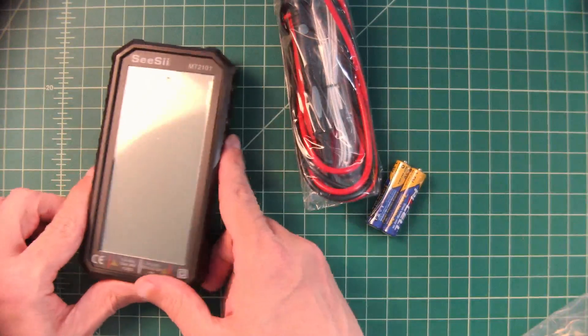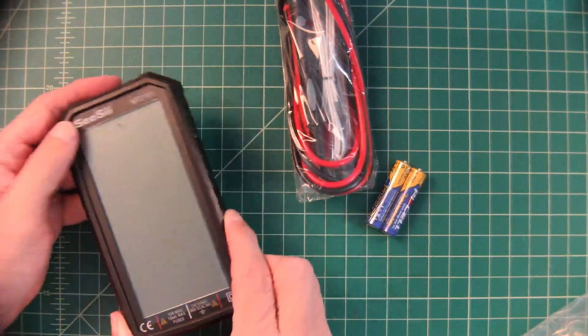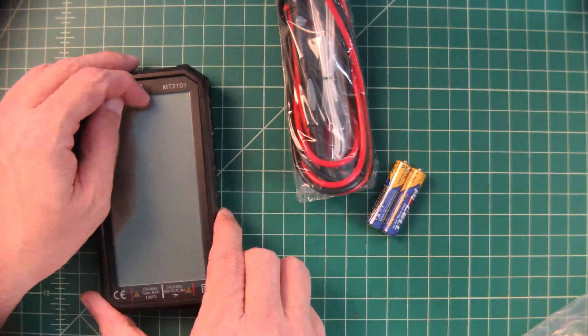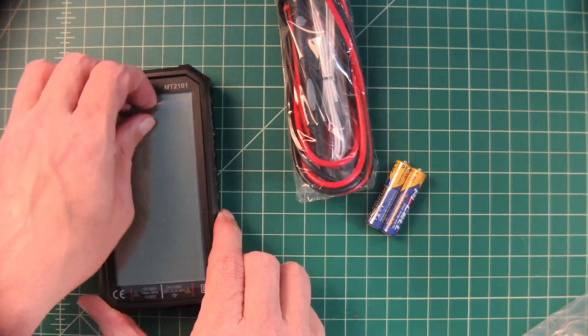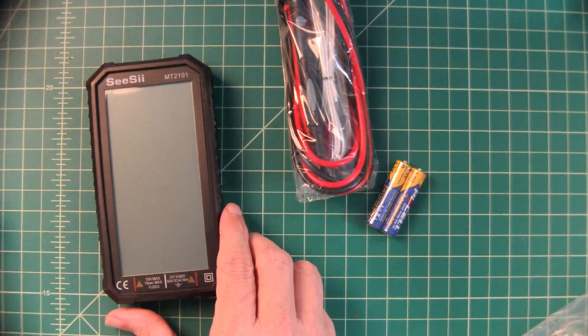This is a really unique multimeter in that its form factor is quite small. It's almost the size of a phone just a little bit bigger and a little bit thicker. Let's get this annoying plastic off of here.